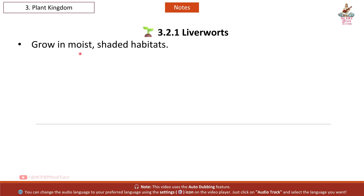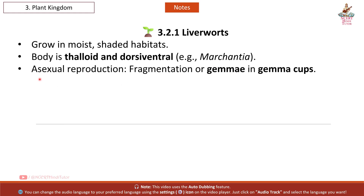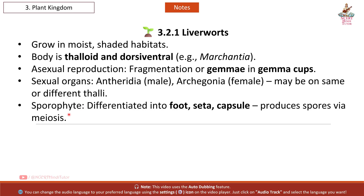Liverworts: grow in moist, shaded habitats. Body is thalloid and dorsiventral. Example: Marchantia. Asexual reproduction by fragmentation or gemmae in gemma cups. Sexual organs: antheridia (male) and archegonia (female), may be on the same or different thalli. Sporophyte differentiated into foot, seta, and capsule; produces spores via meiosis.